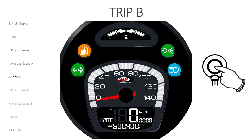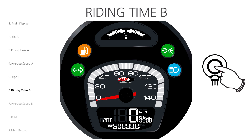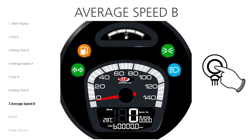We press the button again to enter the Riding Time B menu, where we see the B measurement of the Riding Time. Of course it's also possible to reset the B measurement by holding down the button for 3 seconds. The next menu we enter by pressing the button once is Average Speed B. The display reads AVE and, as you can see, the average speed has also been reset.